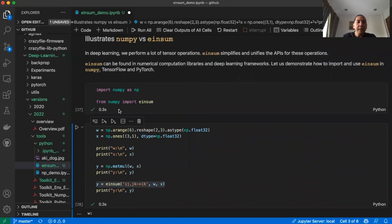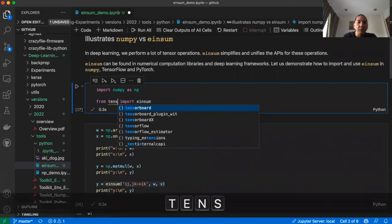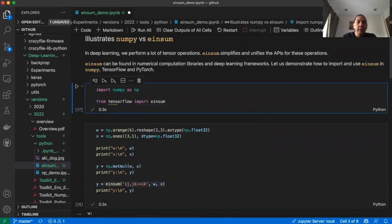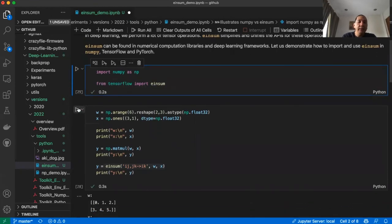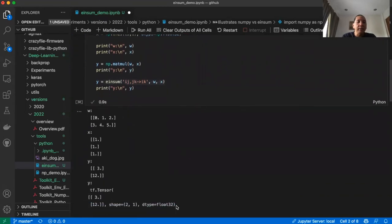For TensorFlow, all we need to do is change this NumPy into TensorFlow. Then we import EinSum, execute the same code, and we arrive at the same result.